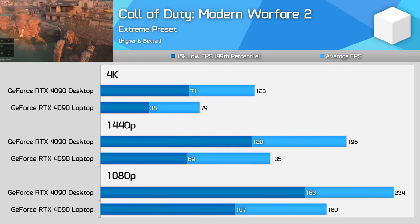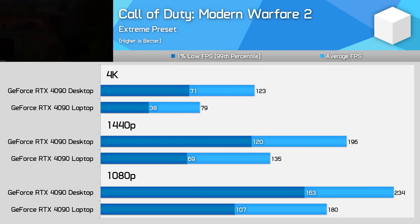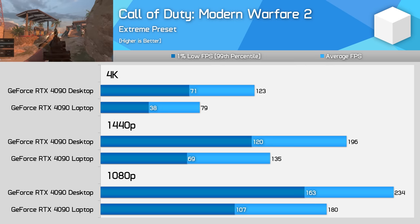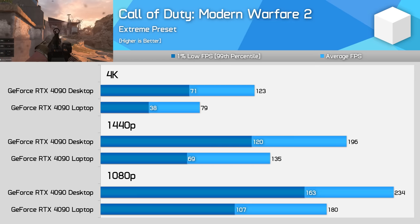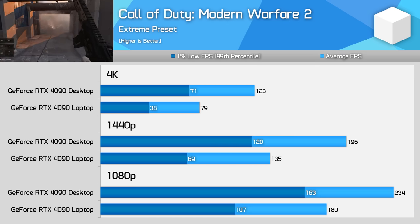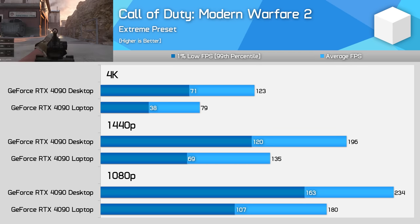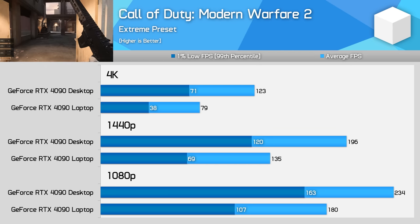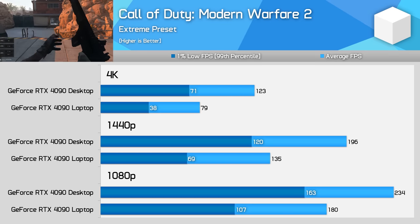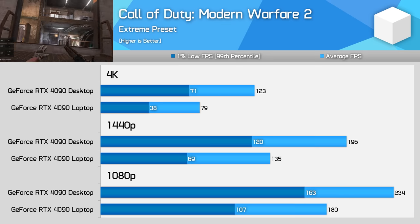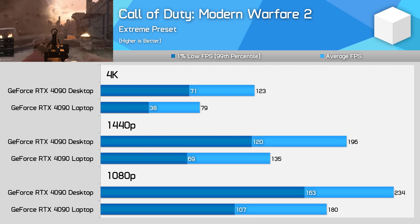Gamers playing Modern Warfare 2 will definitely want the desktop configuration as it's quite a bit faster at all resolutions using extreme settings, with similar margins seen using basic settings. 30% faster at 1080p, 45% faster at 1440p, and 55% faster at 4K, with much stronger 1% lows at all resolutions as well. The latency difference between gaming at 80fps and 120fps is something that I can notice. I'm not really a hardcore multiplayer gamer, but I suspect most serious multiplayer fans would much prefer a desktop setup.